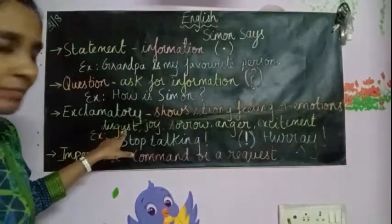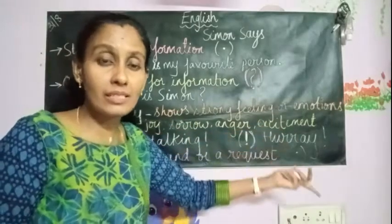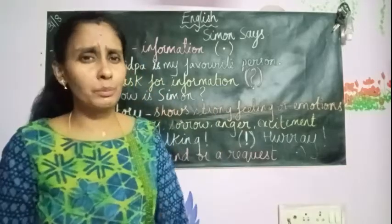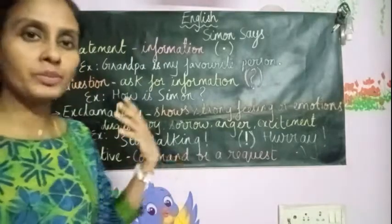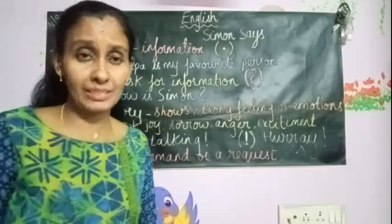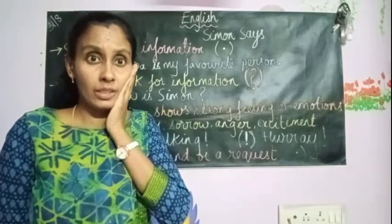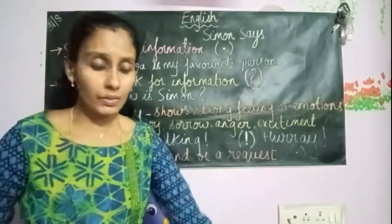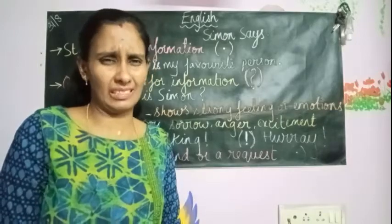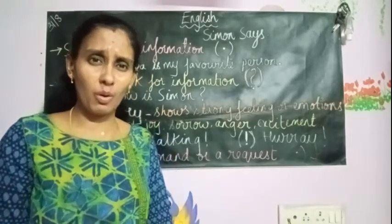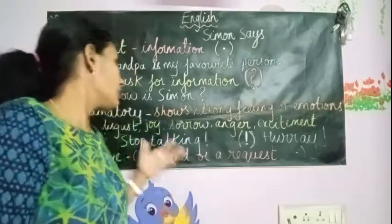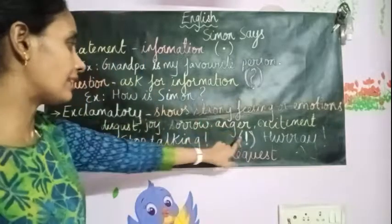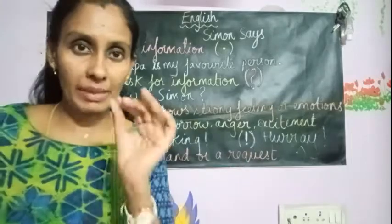Exclamatory sentences can show disgust, joy, sorrow, anger, or excitement. For example, 'Wow, that's a beautiful painting!' If you drop something and it breaks: 'Oh my god, I broke it!' — that also comes under exclamatory. If you see something very dirty on the floor and feel disgusted, that also shows a strong feeling. Any sentence which shows strong feelings or emotions and ends with an exclamation mark is called an exclamatory sentence.